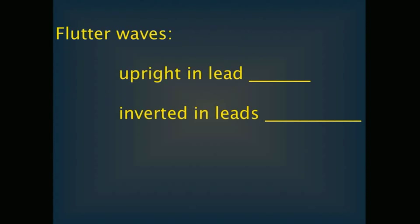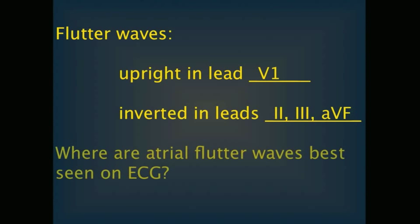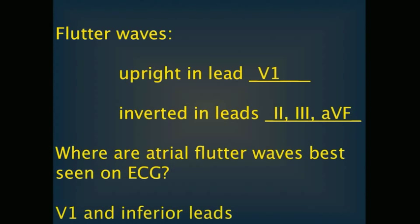Atrial flutter waves are typically upright in V1 and inverted in the inferior leads. Upright flutter waves are found in V1; inverted flutter waves are found in the inferior leads, most notably in lead 2. In addition, atrial flutter waves are usually best seen in V1 and the inferior leads. So if you suspect atrial flutter, there is good reason to look at V1 and the inferior leads.